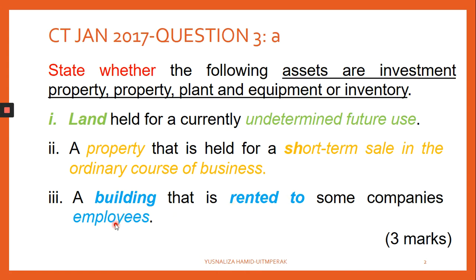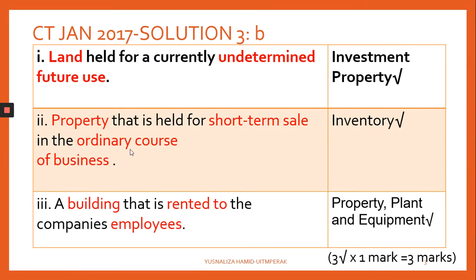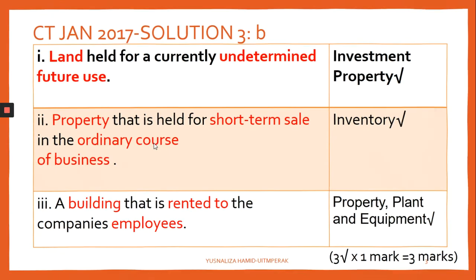The next one is a building that is rented. Don't get confused by the word 'rented' — it does not always mean it is an IP unless stated otherwise. Here it says rented out to employees. When you rent out to employees, that is a PPE, not an IP. So the first is IP, the second is inventory, and the third — rented to employees — is PPE.